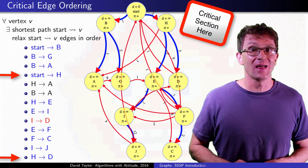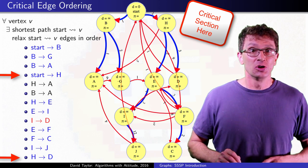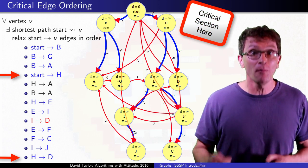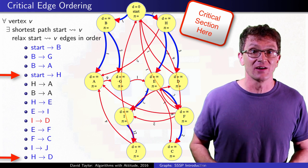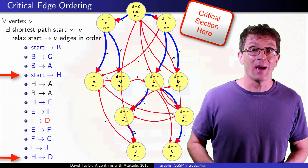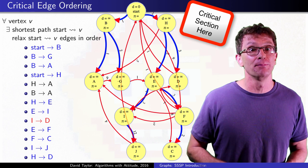You can have extra relaxations jammed in there, you can have edges relaxed more than once, but somewhere in the order of edges that you relax, edges on a shortest path to each vertex need to be relaxed.